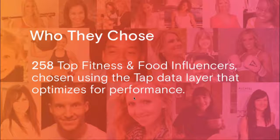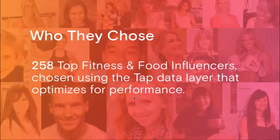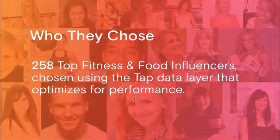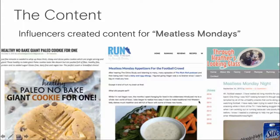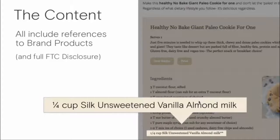We partnered with a food brand who used our software to choose 258 top fitness and food influencers — selected based on performance, not just reach or rate. The influencers were asked to create content their readers would enjoy around a 'Meatless Mondays' theme — it was football season, so football party recipes were fair game. The only requirement was that the post featured the product, either in the ingredients list or in the photo.